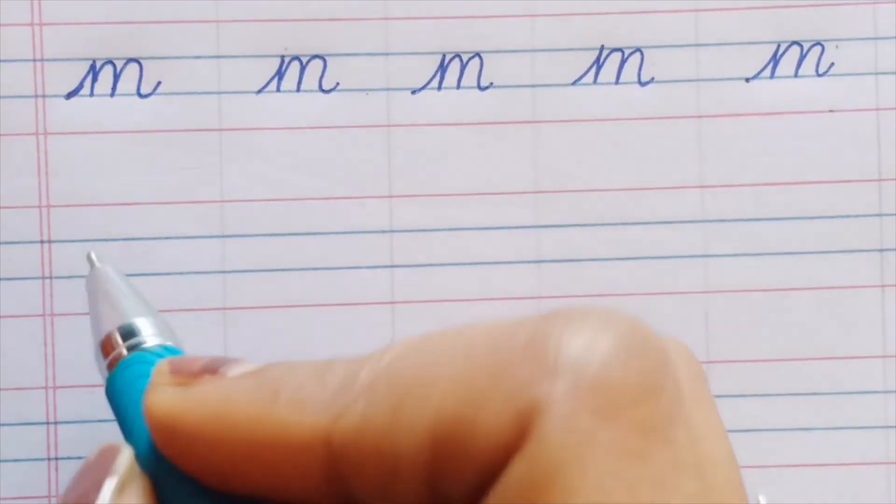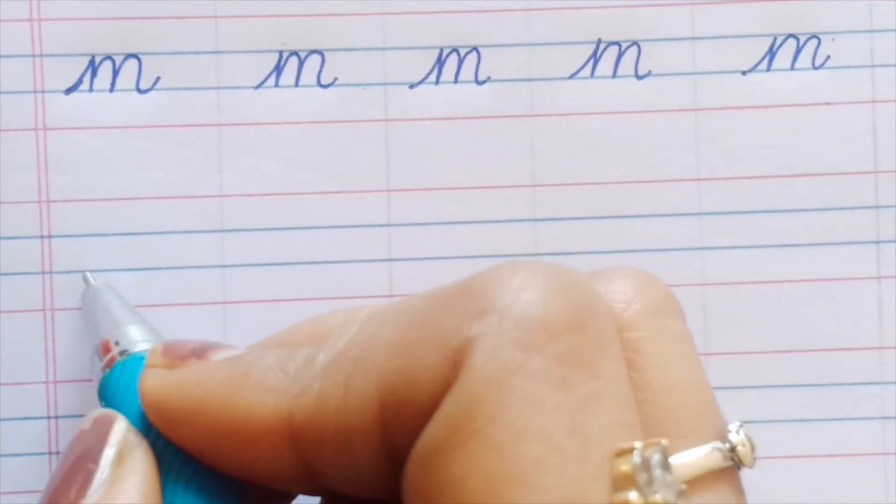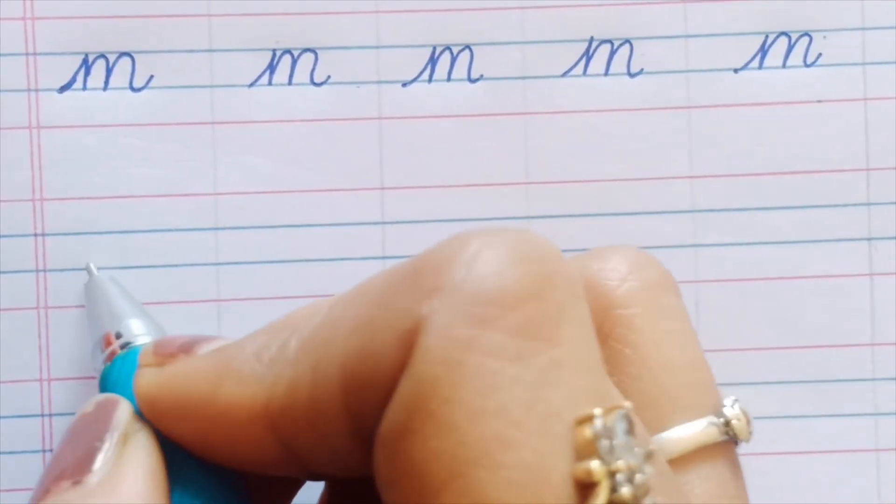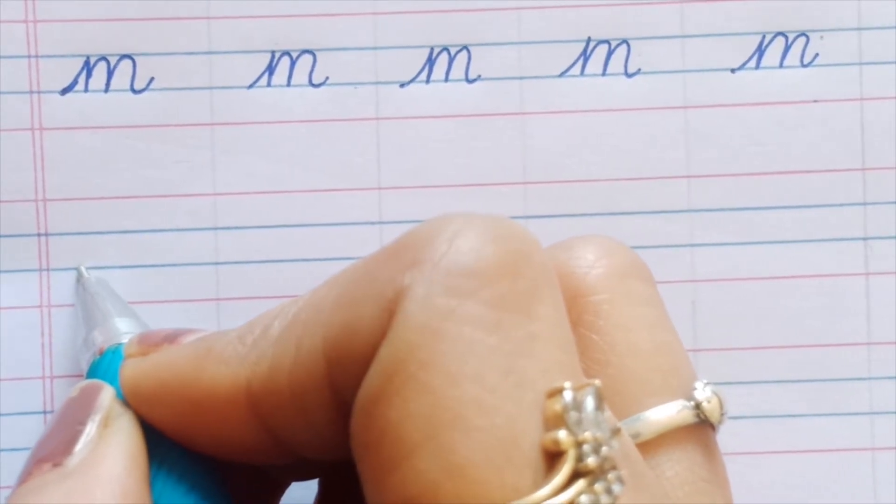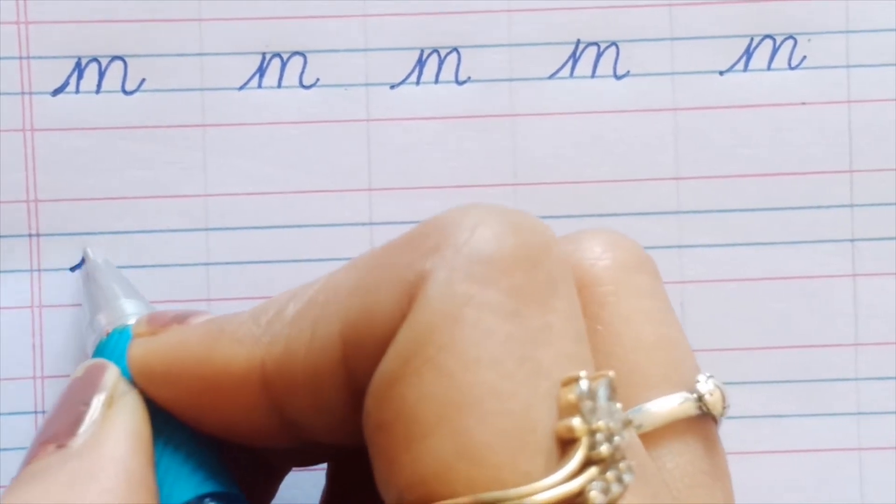So I am done with 'm'. You need to write one whole page. Now we'll do another letter which is small 'h'.